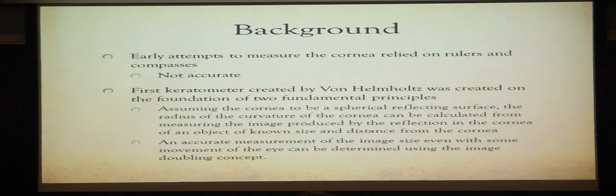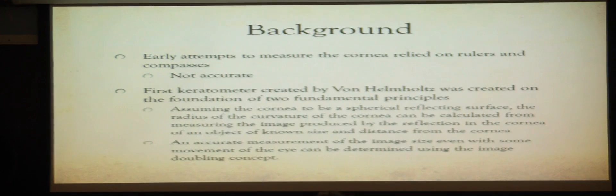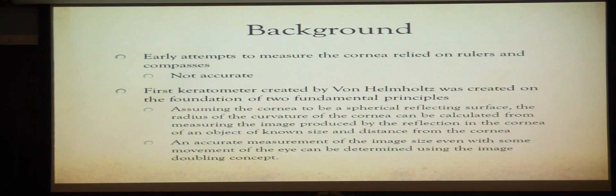Some background information on the keratometer: the early attempts to measure the curvature of the cornea involved the use of rulers and compasses, and obviously this method wasn't really accurate or reliable. The first keratometer was created by Von Helmholtz, and he created it based on two fundamental principles.